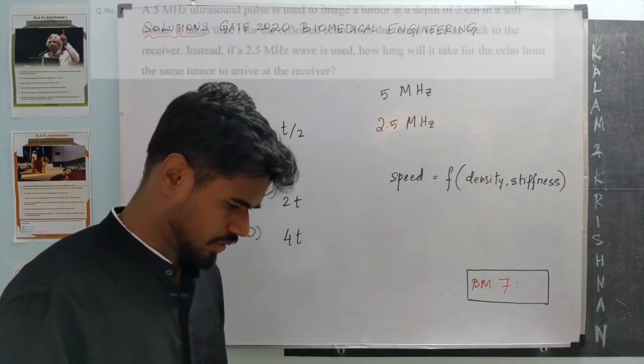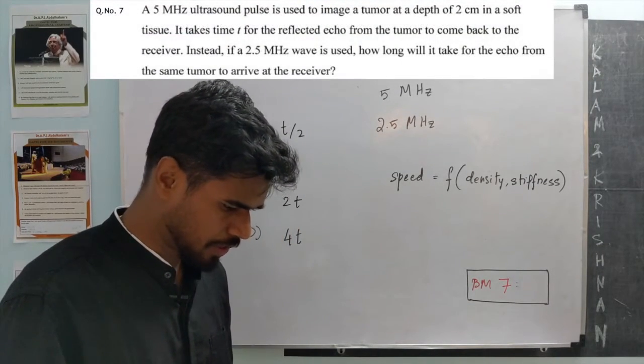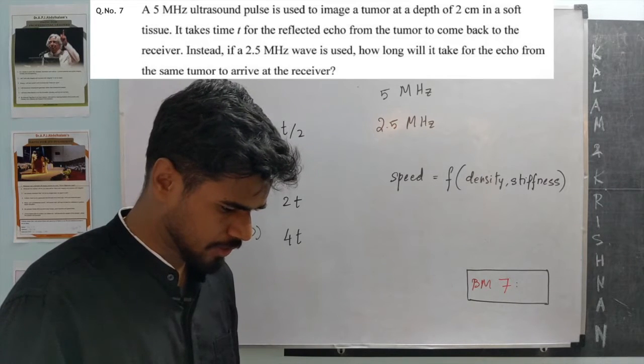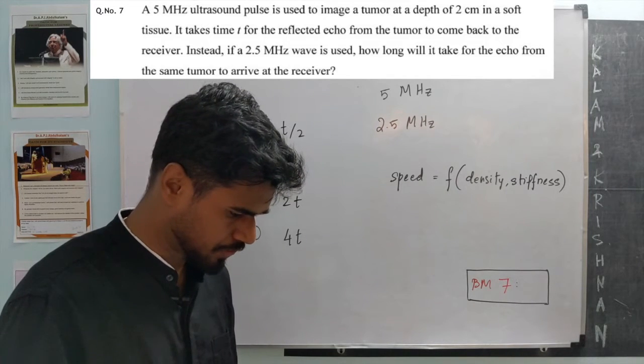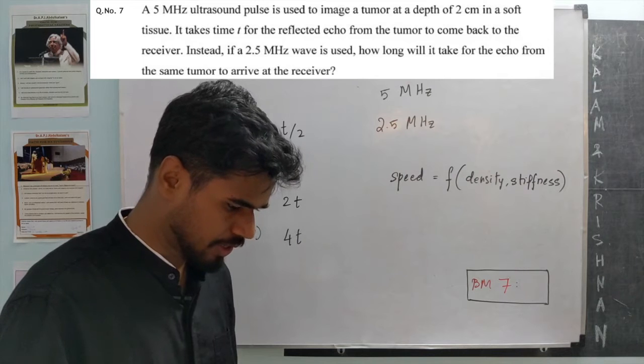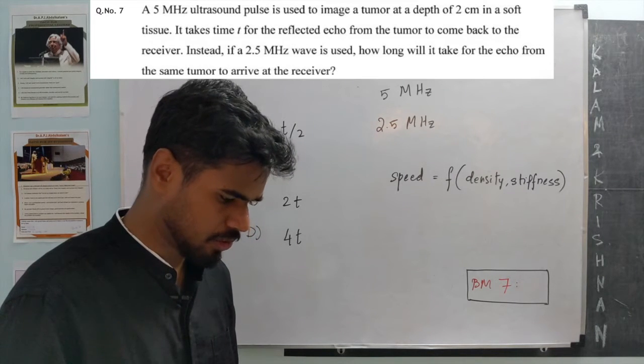Seventh position: A 5 megahertz ultrasound pulse is used to image a tumor at a depth of 2 centimeters in a soft tissue. It takes time T for the reflected echo from the tumor to come back to the receiver.